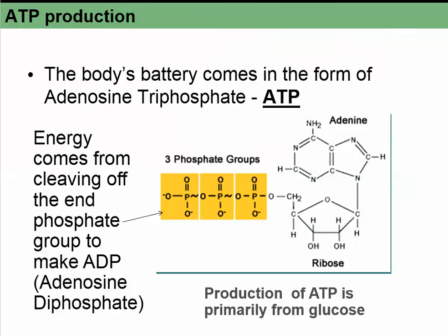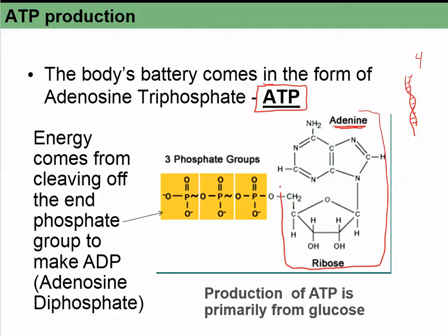Now let's talk about how we actually form ATP. ATP means adenosine triphosphate. Adenine is one of the four DNA bases, and if you combine adenine with ribose, that makes a molecule called adenosine. That's what this molecule is called, and it's related to DNA.